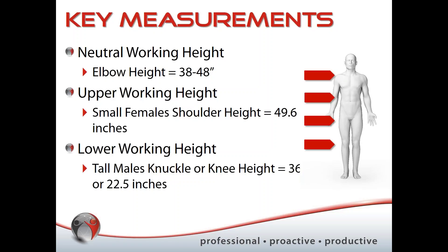Now let's look at some other heights beyond the main working height. We need to look at upper working height and lower working height. Going back to our goal of accommodating 95% of our working population: if you just pick a body part you think will be the right fit, you're going to miss out on that opportunity to accommodate 95% of your working population.